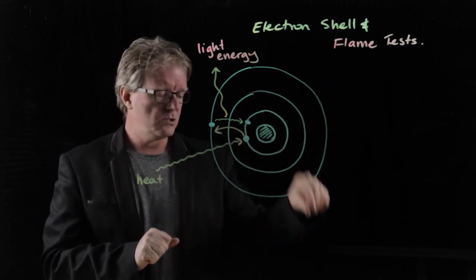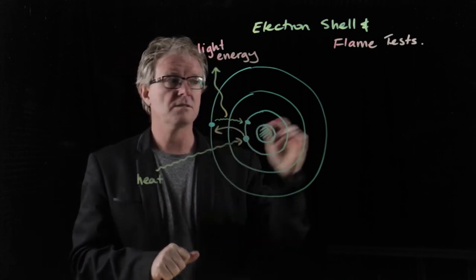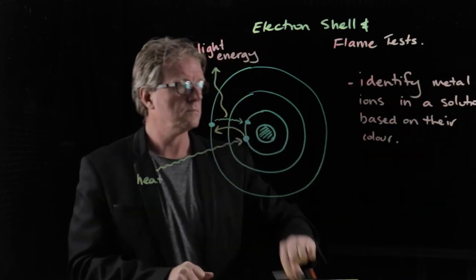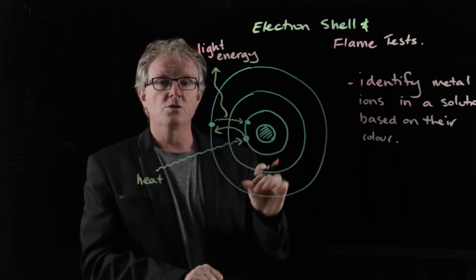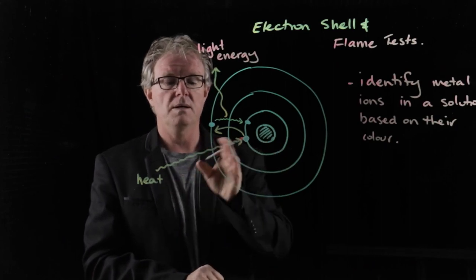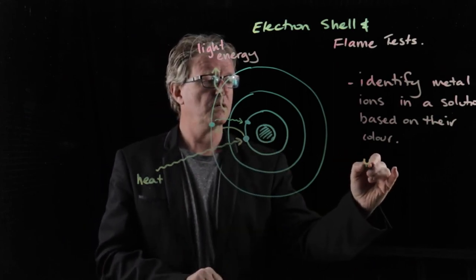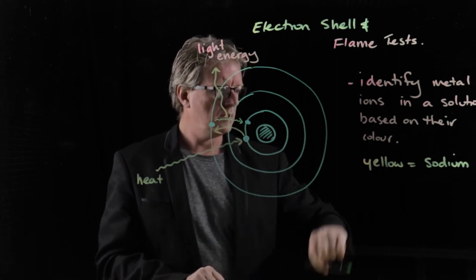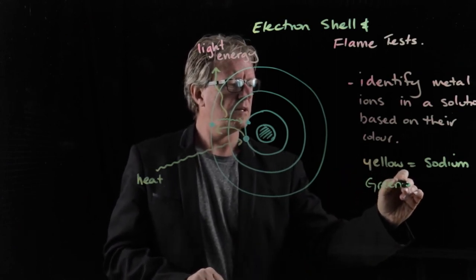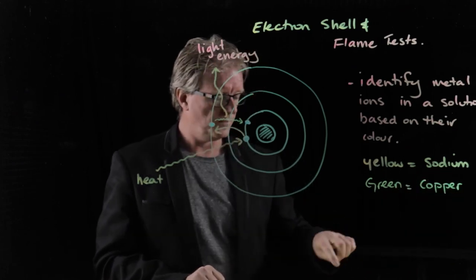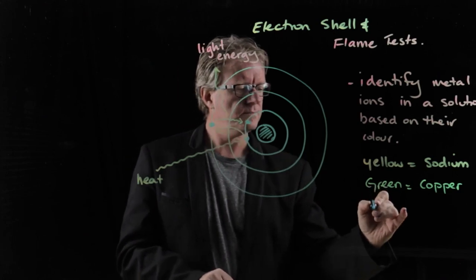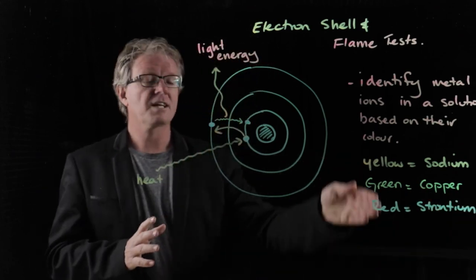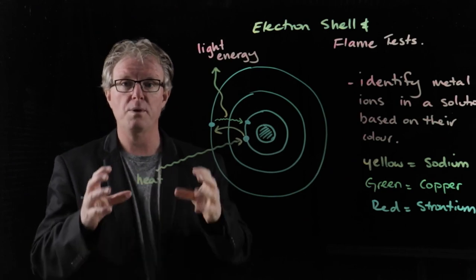So flame tests are a way to identify types of metal ions present based on their color. So let's write that down. Flame tests identify the metals in a solution based on their color. So if you heat a solution up in the Bunsen burner and it turns out to be yellow, then that's saying you have sodium. As we said before, if it was green, then that was going to be copper. So the different colors that you see allow you to identify what type of metal ions are present in a mixture.